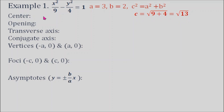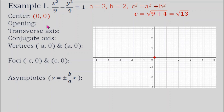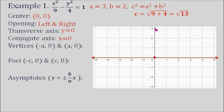For the opening, since our equation starts with x squared, the graph opens to the left and to the right. The transverse axis has equation y = 0, and the conjugate axis has equation x = 0. The vertices have coordinates (−a, 0) and (a, 0). Our a is 3, so the vertices are (−3, 0) and (3, 0). The foci have coordinates (−c, 0) and (c, 0). Our c is √13, so the foci are (−√13, 0) and (√13, 0).